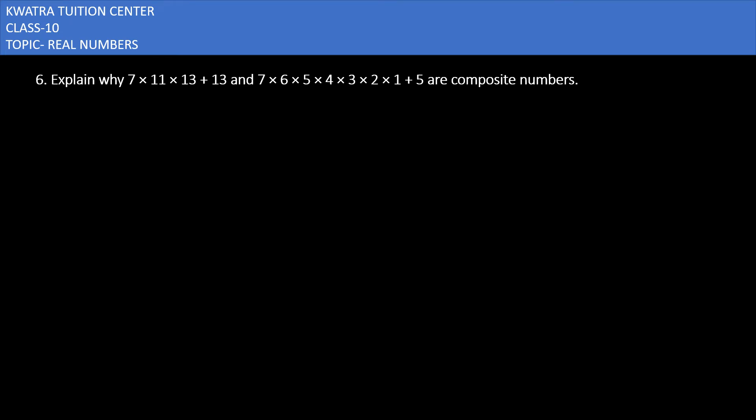Question number 6 is explain why 7×11×13 + 13 and 7×6×5×4×3×2×1 + 5 are composite numbers. So first you should know that prime numbers and composite numbers are different. Prime numbers can be divided by one and their number, but composite numbers have factors other than one and itself.